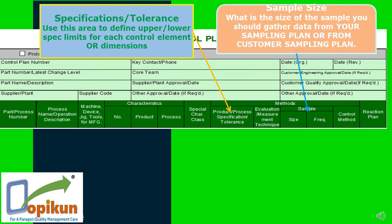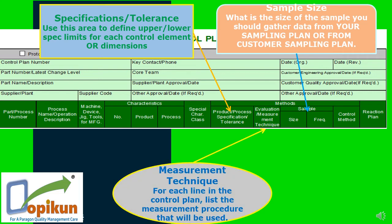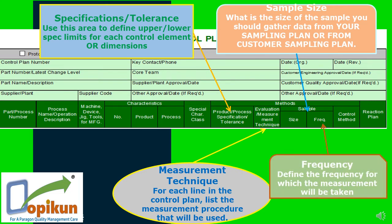Sample size — what is the size of the sample? You should gather data from your sampling plan or from the customer sampling plan. Measurement technique — for each line in the control plan, list the measurement procedure that will be used. Frequency — define the frequency for which the measurement will be taken.